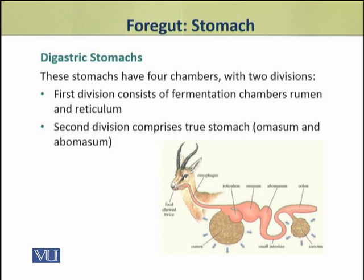These are two major divisions, and there are two chambers in each division, giving four chambers overall. The first division contains fermentation chambers called rumen and reticulum, which receive the food. The second division contains omasum and abomasum, which are called the true stomachs and are basically secretory in function.